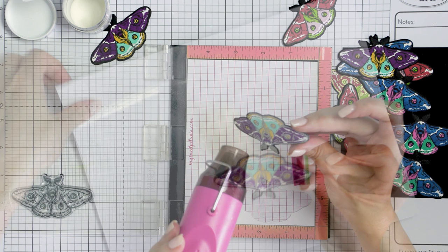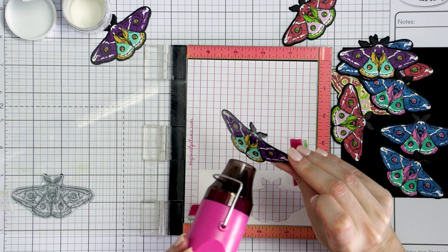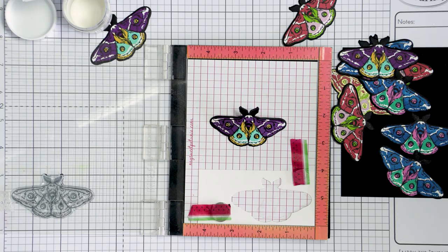You can also heat emboss it in some other color of embossing powder. I did try using gold at first, but I didn't quite like how the gold went with the other colors in the card.